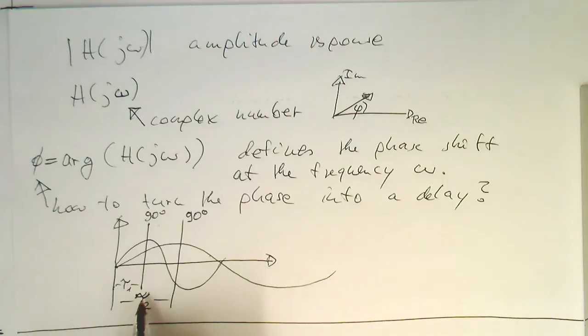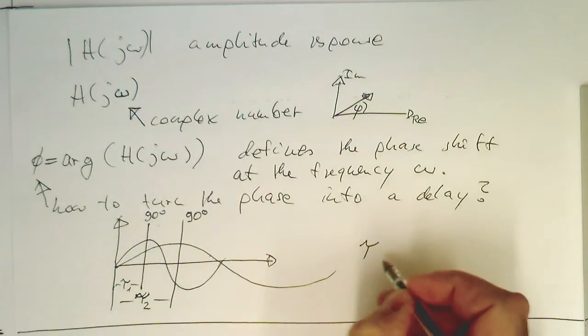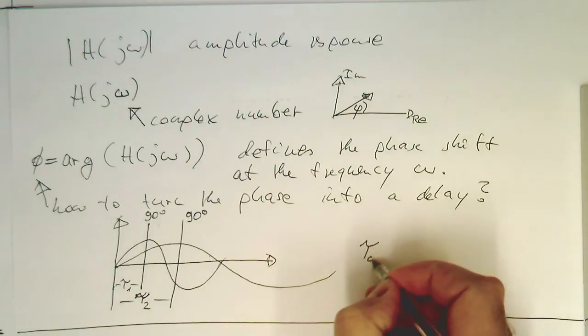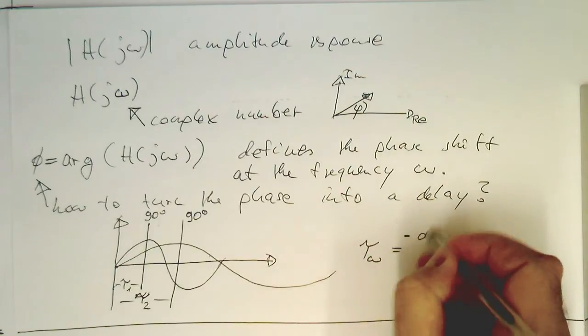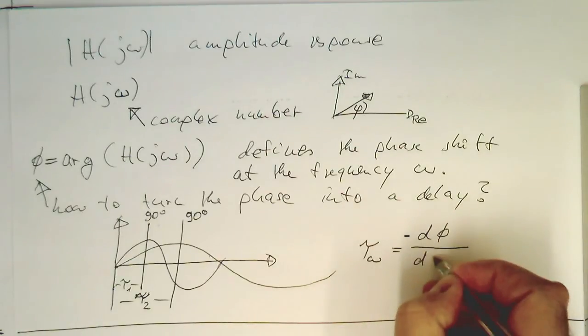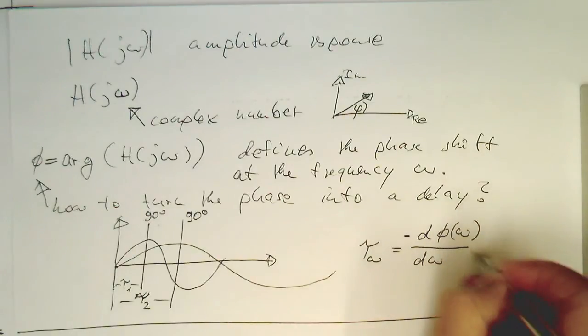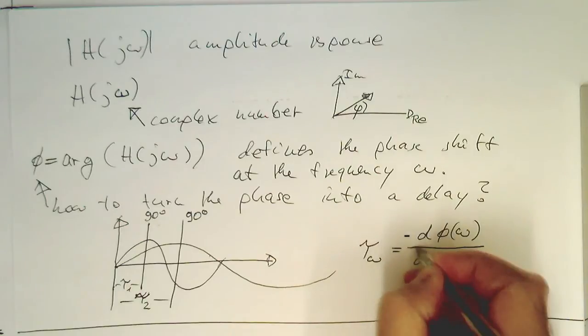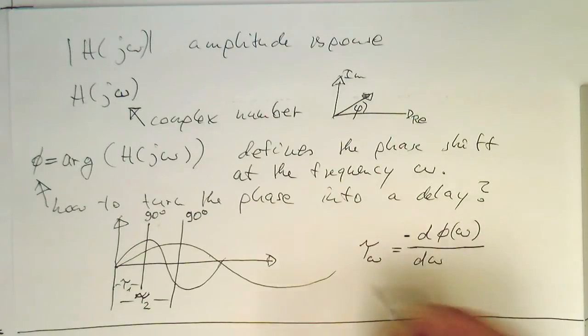So in order to normalize this, what we do is define our time tau omega as d phi divided by d omega. And this phi is obviously dependent on omega, normalizing our angle with frequency omega. And this tau, this is called the group delay.